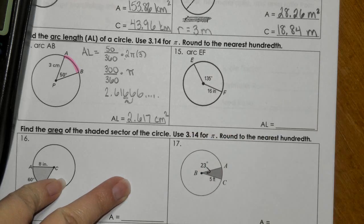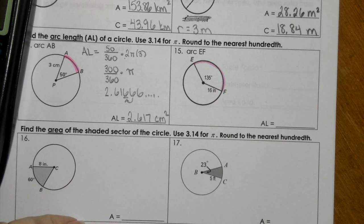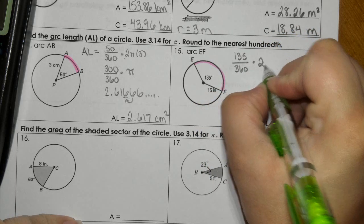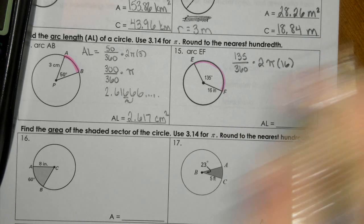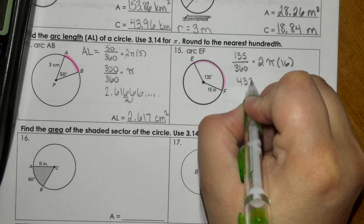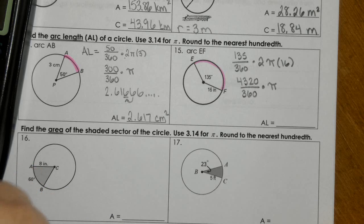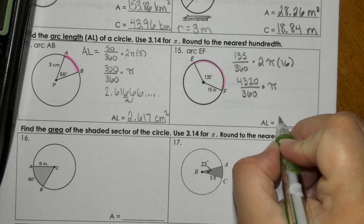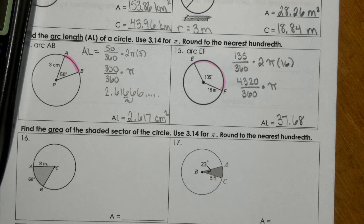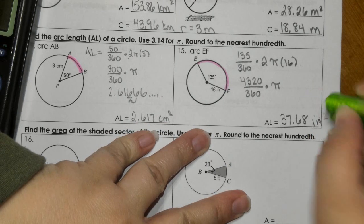For number 15, same thing. We're finding the arc length of EF. So the angle measurement over 360 times 2π times 16. So 135 times 2 times 16, I get 4,320 divided by 360 times that 3.14. So this time I get 37.68, so it actually doesn't go to the hundredths place, which is fine. I'm just going to leave it like that. Inches. This is arc length.